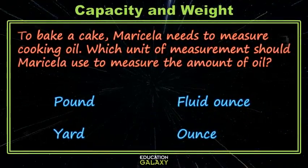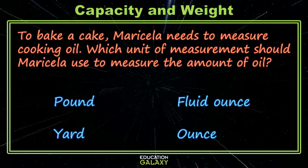Let's take a look at an example. Maricela needs to measure some cooking oil, and we want to know which unit she should use to measure the amount of oil. Pounds and ounces are for weight — this is not weight. Yard is for length — this is not length. So we are left with the fluid ounce. That would be the best choice for measuring the oil.